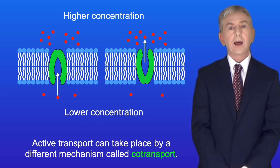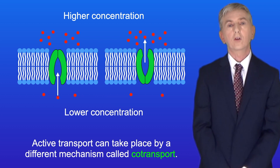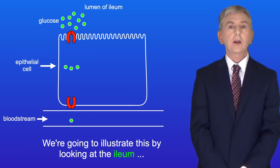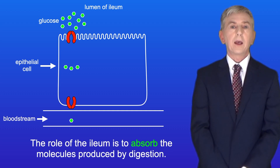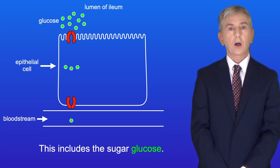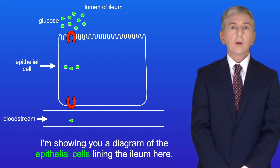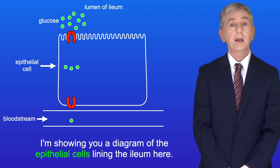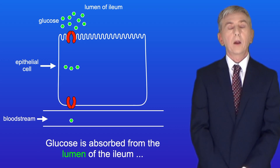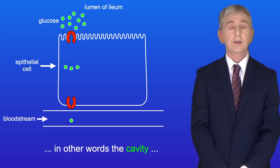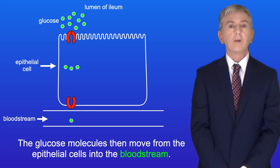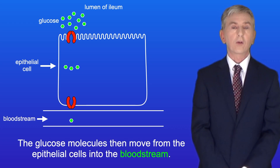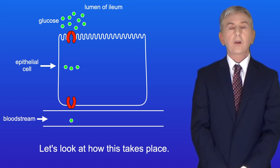Active transport can also take place by a different mechanism called co-transport. We're going to illustrate this by looking at the ileum, which is part of the small intestine. The role of the ileum is to absorb the molecules produced by digestion, and this includes the sugar glucose. I'm showing you a diagram of the epithelial cells lining the ileum here. Glucose is absorbed from the lumen of the ileum — in other words the cavity — into the epithelial cells lining the lumen. The glucose molecules then move from the epithelial cells into the bloodstream.